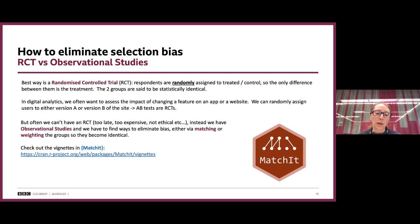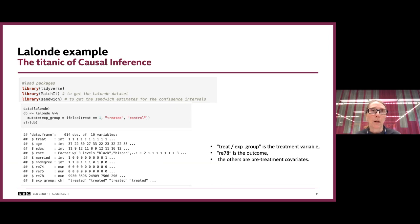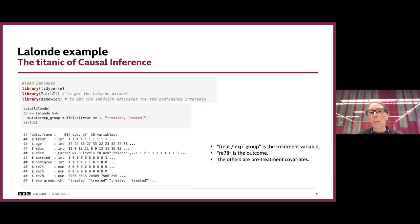In R there's a package called MatchIt that has loads of vignettes, is very comprehensive, and explains the different approaches to matching and weighting. Within the MatchIt package there is a dataset called Lalonde — it's the Titanic of causal inference, a dataset you will encounter again and again. It comes from a study done in the 1970s where people were offered a special training programme and we wanted to assess the effectiveness of that programme. The dataset has 614 observations with a treatment variable indicating whether someone went on the training programme and an outcome of their revenue in 1978.